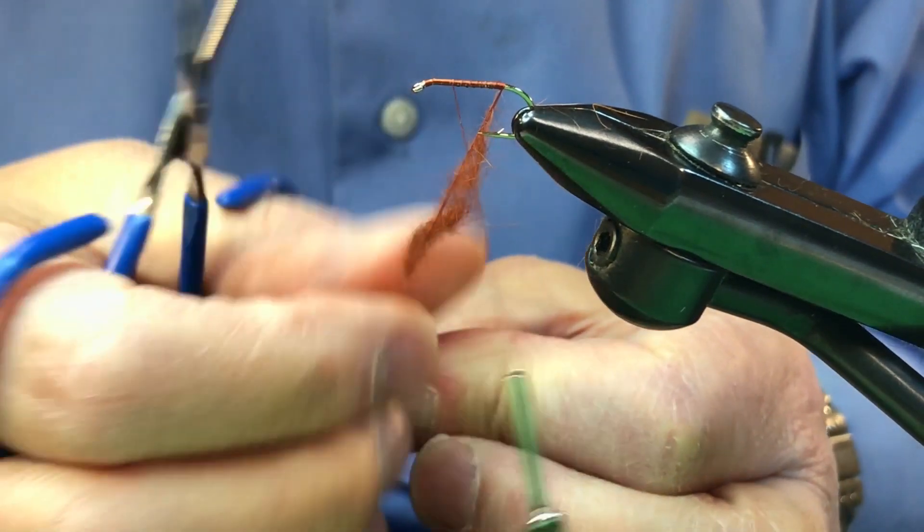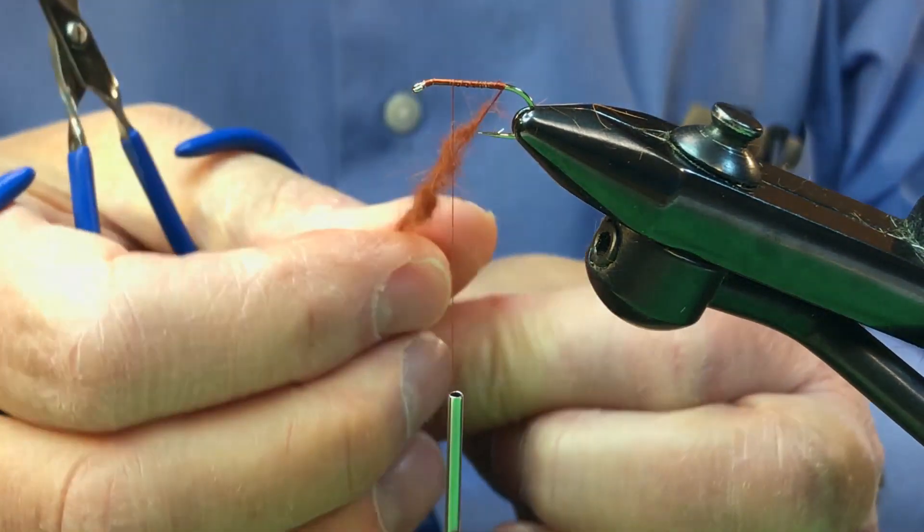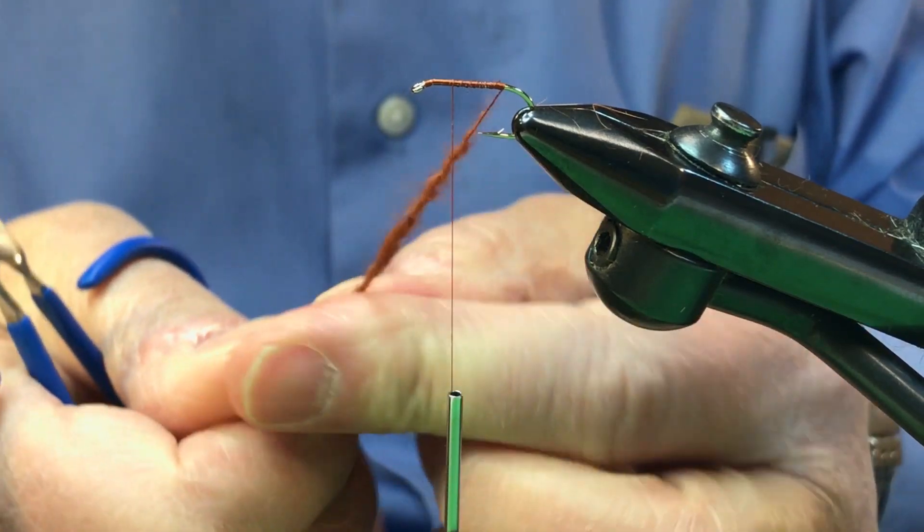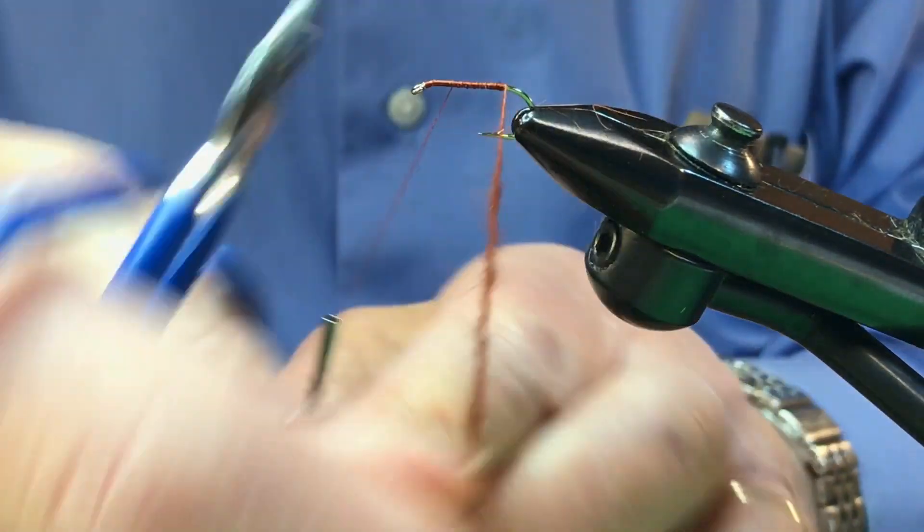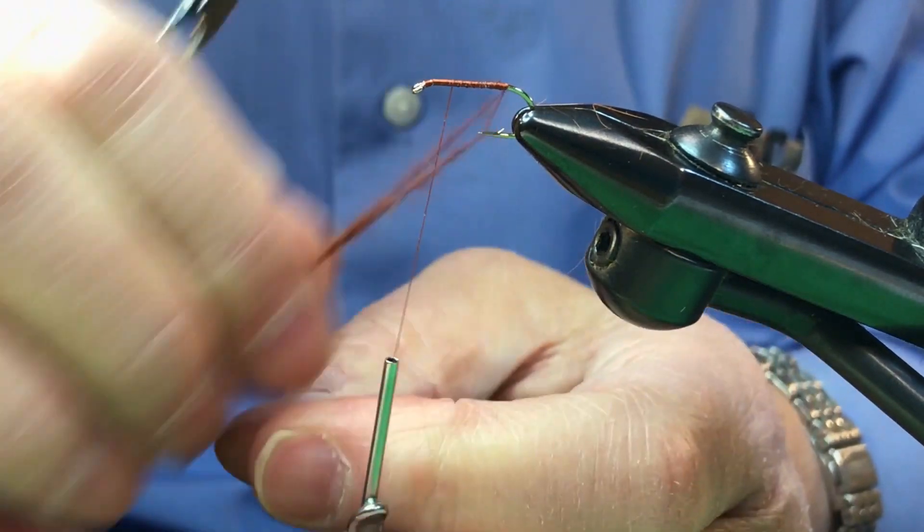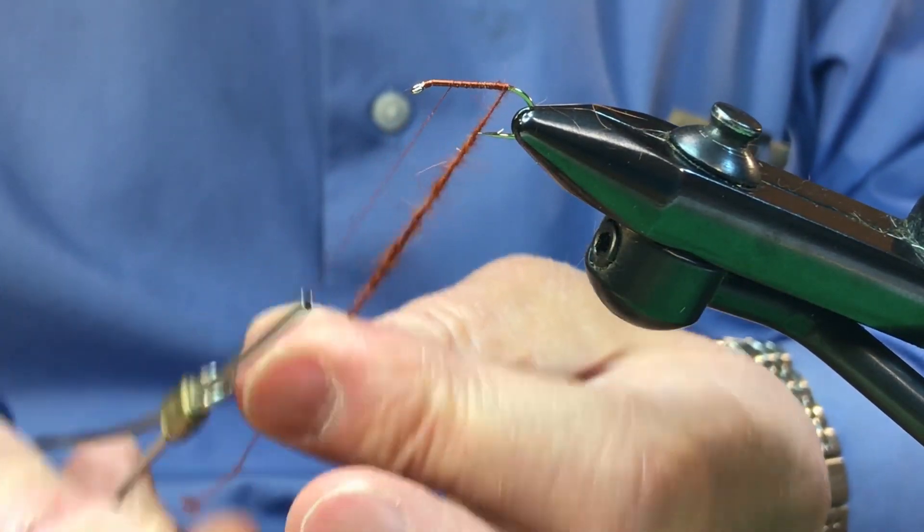Now all we have to do to secure this dubbing is to take it and twist it at the base. You can do that with your hands just like that. Now you've got your dubbing twisted on securely and you can wrap it on—no dubbing tool needed.